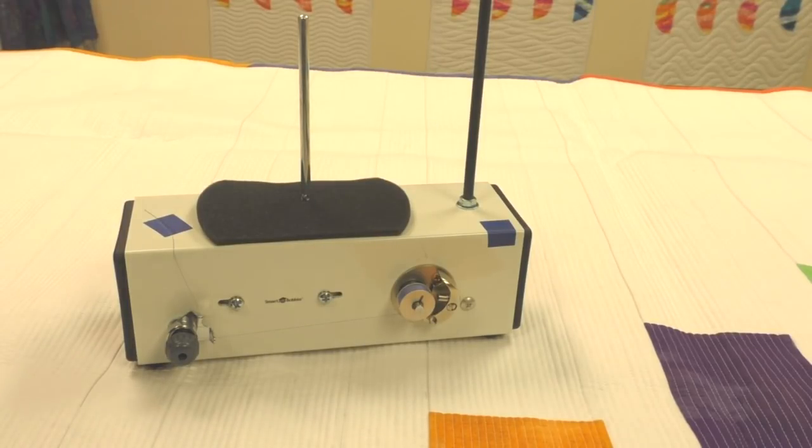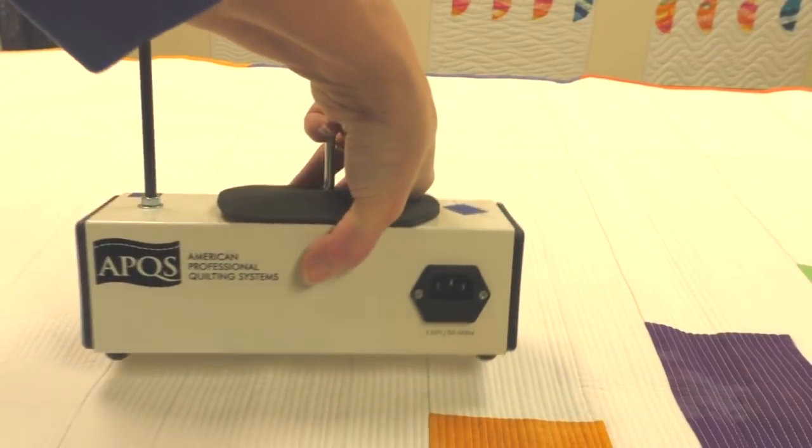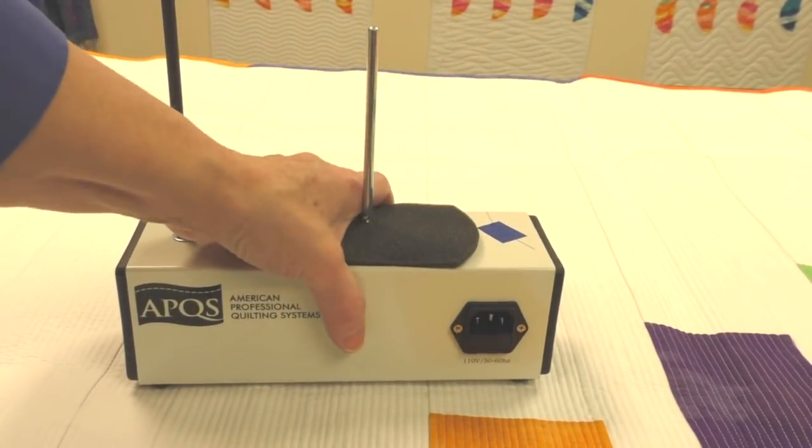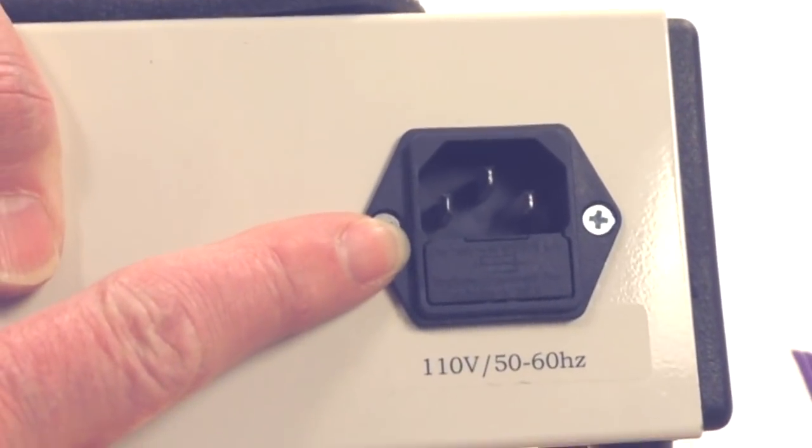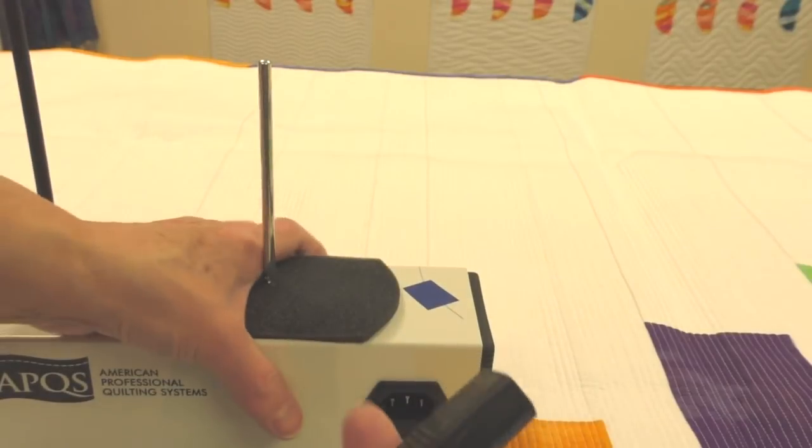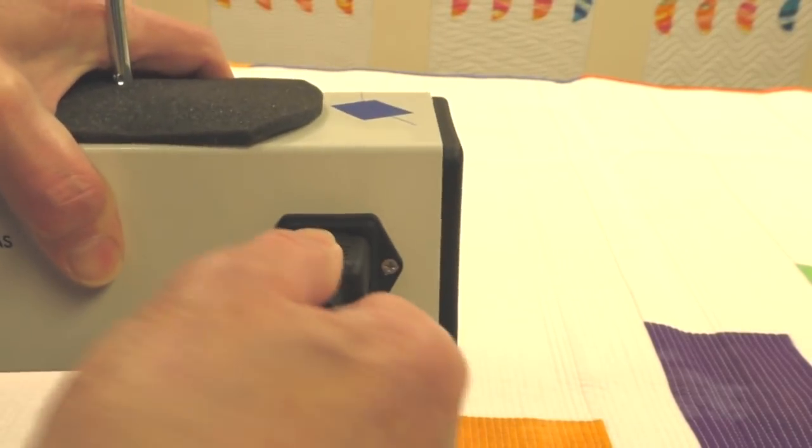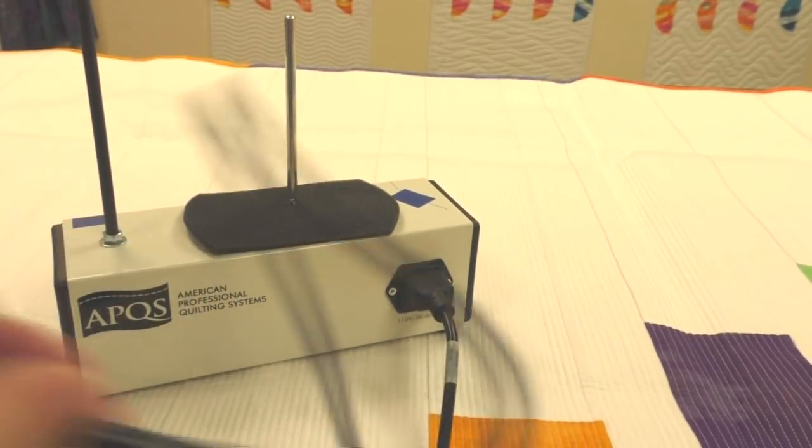Well all that's left is to make the electrical connection. I'm going to turn the winder around so that you can see the back side. Right here we've got the access port for the incoming power cord that's included with the winder. Take your power cord and insert it directly into the outlet on the back and of course plug the other end into your power outlet.